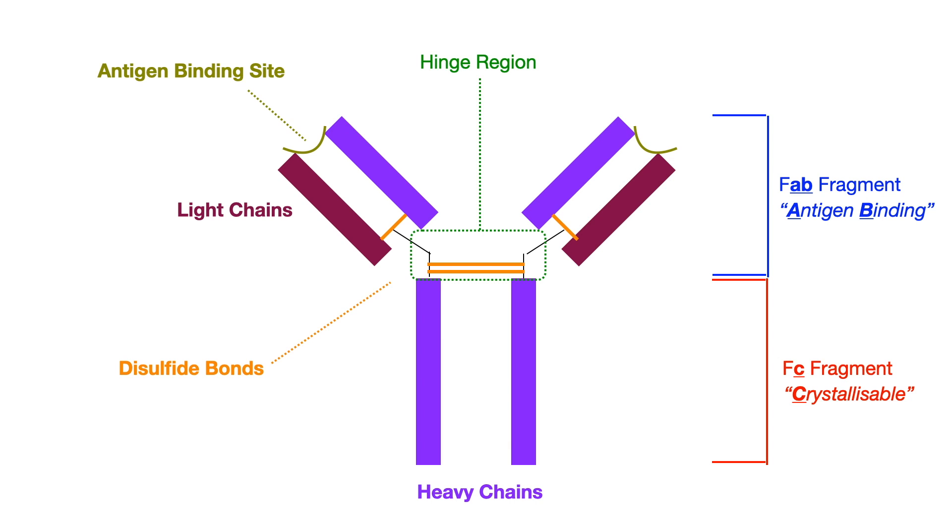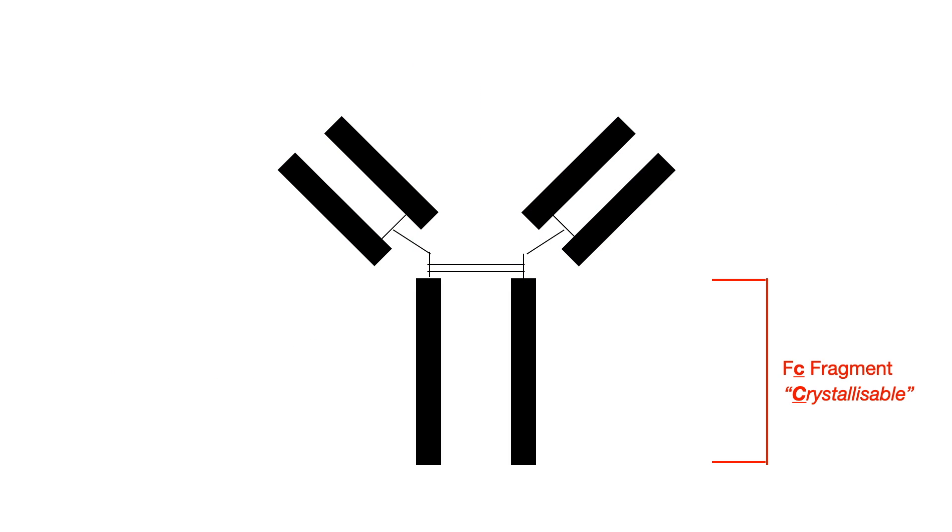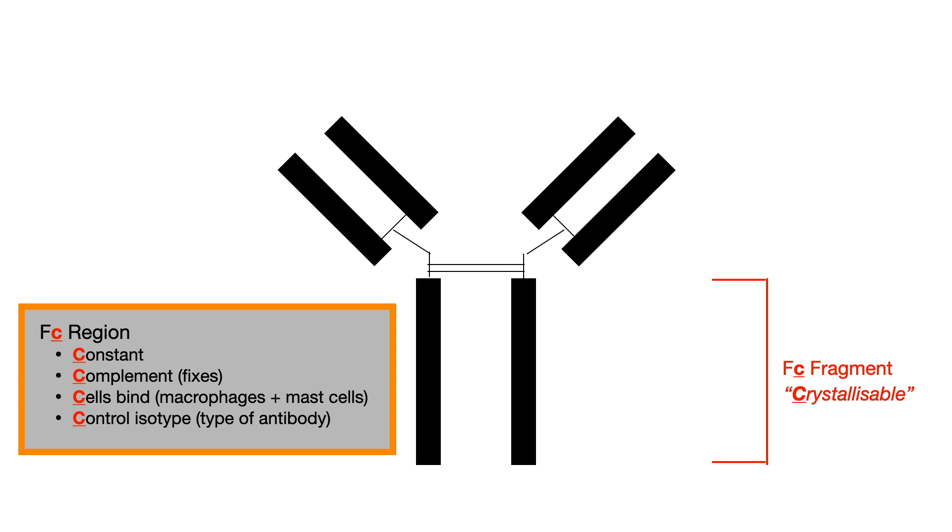Let's start with the FC fragment. Now, I told you, I don't care about the word crystallizable. The C in FC does stand for crystallizable, but moving forward, you can forget that word. Instead, when you think of FC, I want you to think of the following C words. C for constant, C for complement, C for cells bind here, and C for controlling the isotype. So, what does all of this mean?